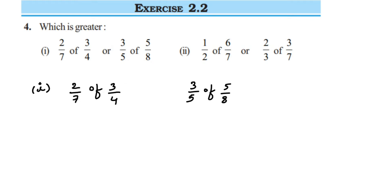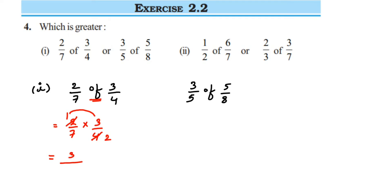2/7 of 3/4 — 'of' means multiplication, so we put a multiplication sign. We can cancel 2 and 4: 2 ones are 2, 2 twos are 4. Multiplying the numerators: 1 × 3 = 3. In the denominator: 7 × 2 = 14. So the first number is 3/14.